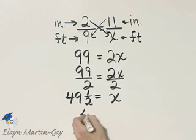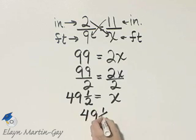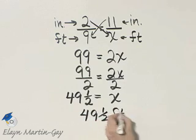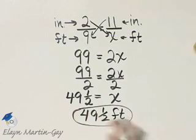What does that mean? It means the length of the home is actually 49 and 1 half feet.